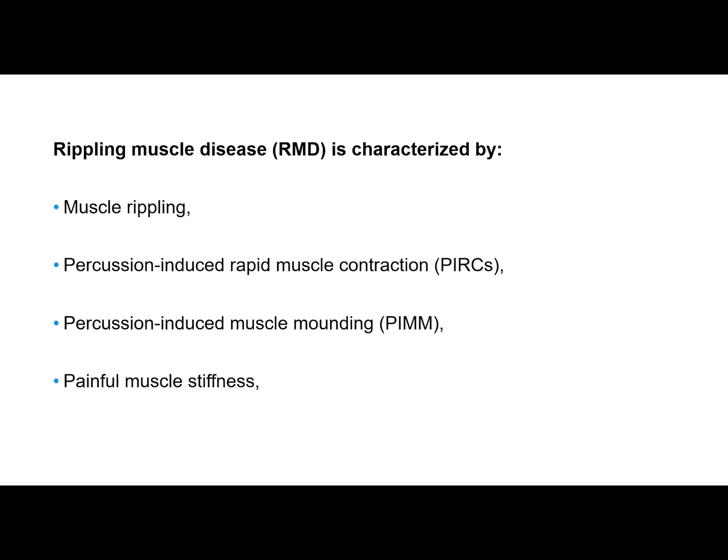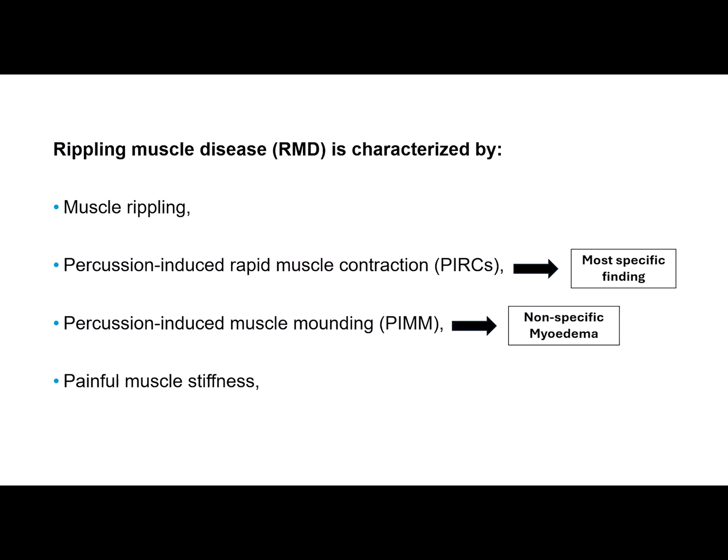Rippling muscle disease is a rare disorder of muscle hyperexcitability. It is characterized by muscle rippling, percussion-induced rapid muscle contraction, percussion-induced muscle mounding, and painful muscle stiffness. Percussion-induced rapid muscle contraction is the most consistent finding. On the other hand, percussion-induced muscle mounding is not specific for rippling muscle disease, and a similar phenomenon can be seen in myoedema and hypothyroidism.